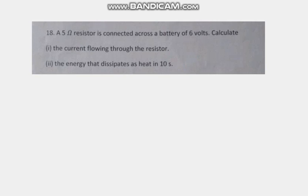Okay, so the next question is: A 5 ohm resistor is connected across a battery of 6 volts. Now we have to calculate the current flowing through the resistor and the energy that dissipates as heat in 10 seconds. So first, come to the first part of the question.